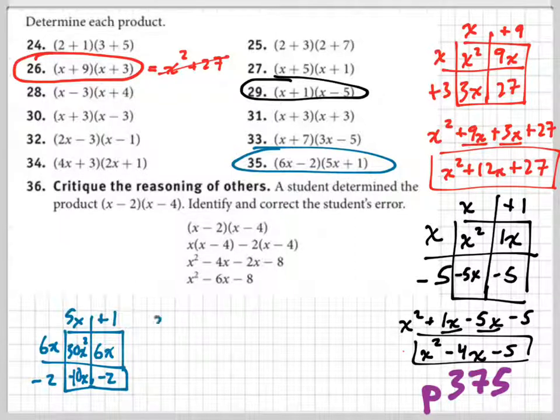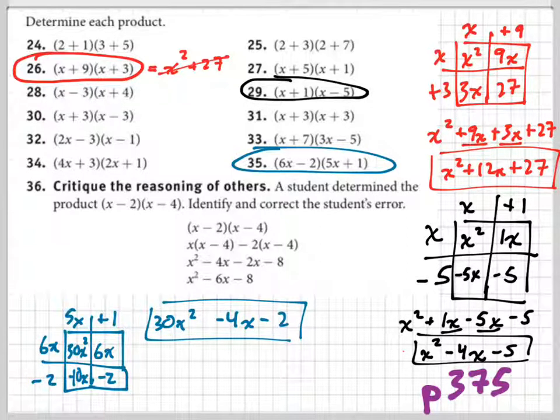When I write this out you have 30x squared, and you can shortcut it right here - you can just add these together first so you don't have to write it twice. If I add the two like terms, that's going to give me negative 4x minus 2. That's your answer. There's no like terms to add together. We get a trinomial. Actually, you get that most of the time when you multiply two binomials. There's one situation when you don't get a trinomial when you multiply two binomials, and that's what we're going to look at today.